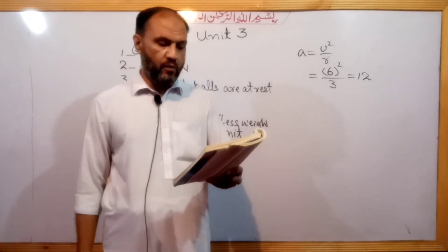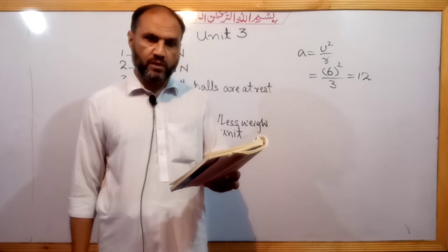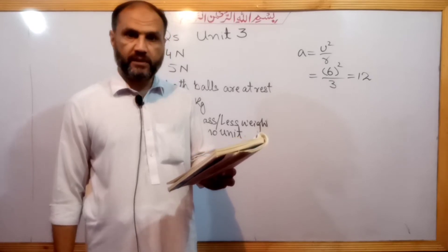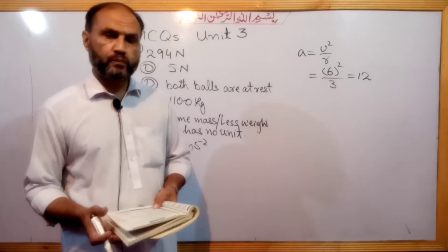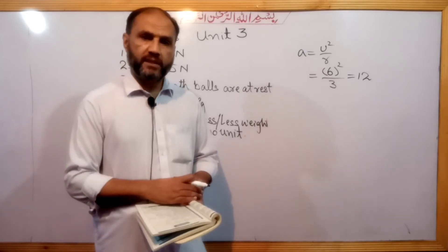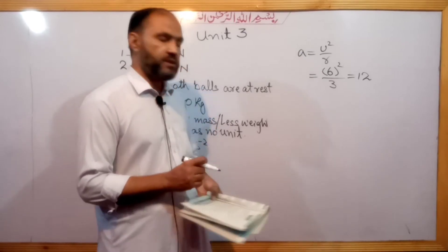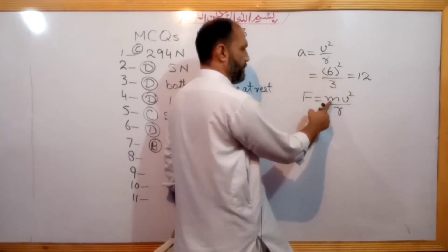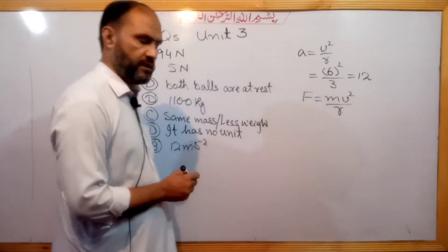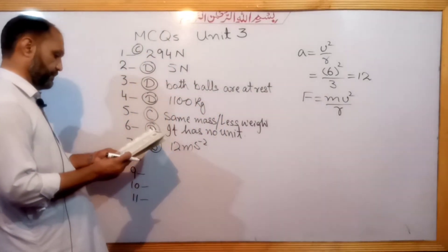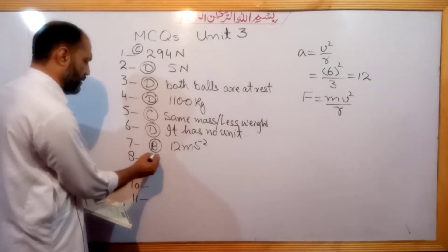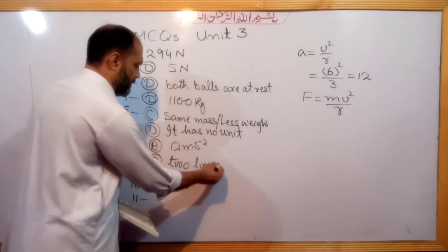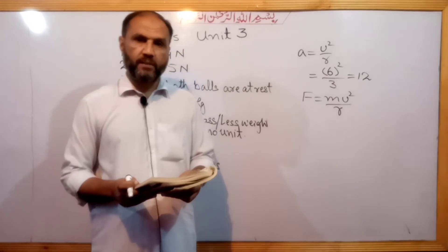Question number 8. How many times will the centripetal force increase if the mass of a body moving with uniform speed in a circle is doubled? Since F = mv²/R, centripetal force is directly proportional to mass. If mass doubles, force doubles. The answer is option B: two times.